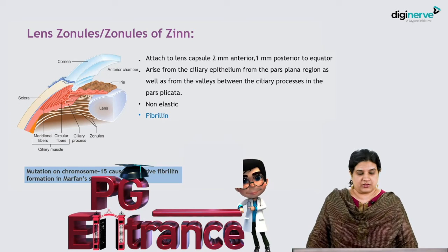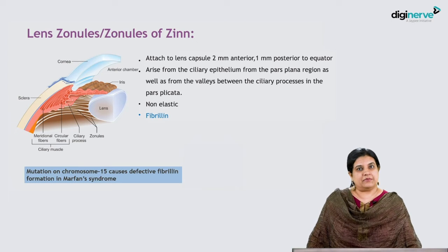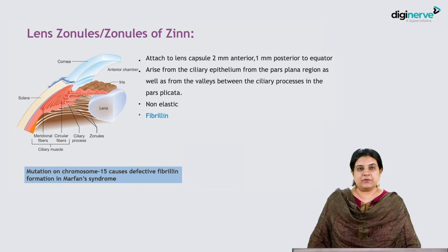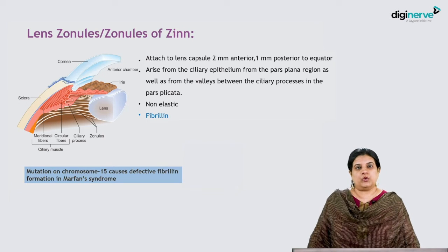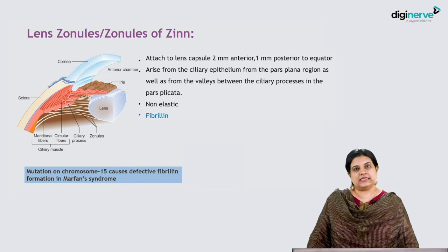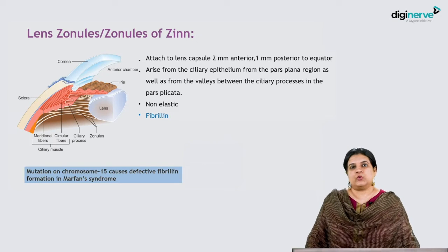If there is defective fibrillin, the zonules are likely to dehisce. This is seen in Marfan syndrome, where there is a mutation on chromosome 15 resulting in defective fibrillin formation.